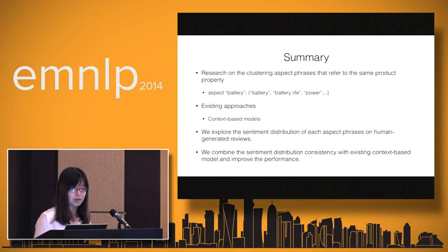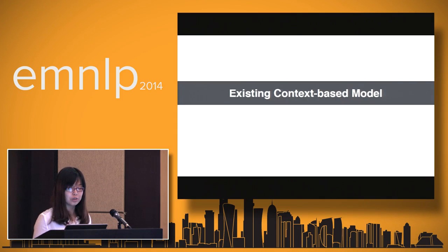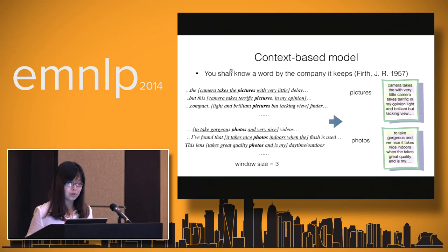Some researchers proposed context-based models to solve this problem. In this paper, we explore the sentiment distribution of each aspect phrase on human-generated reviews, and we also combine the sentiment distribution consistency with existing context-based models and improve the performance. First, I will introduce the existing context-based model briefly. As it's known, you shall know a word by the company it keeps. To cluster those aspect phrases, you have to get a representation for each aspect phrase.